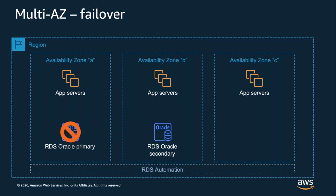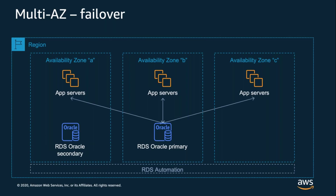If the secondary instance fails or becomes unavailable, RDS automatically detects that, fixes the problem, and restores high availability with no impact on the primary instance or application sessions. If the primary becomes unavailable, RDS automatically converts the secondary instance into a primary, allowing applications to reconnect, then reinstates the failed primary as a secondary. Notice that application servers should run in all available AZs — three in this case — even though the database is only in two AZs. The primary and secondary RDS instances have the exact same configuration, so there's no need to fail back after the fault has been resolved.